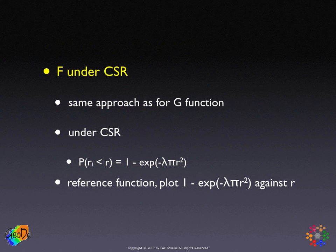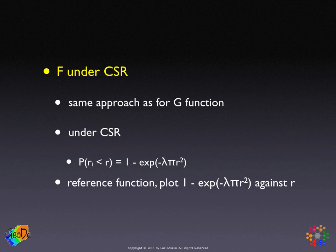Under spatial randomness, we can take the exact same logic as for the G function, and we find again that the theoretical form of the F function under complete spatial randomness is 1 minus negative exponential lambda pi r squared, where lambda is the average intensity of the process.